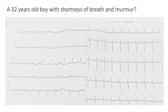This is a 32-year-old patient who presented with shortness of breath, and a murmur was auscultated. An ECG was done showing some important findings that we need to decipher. These findings are occasionally seen and not carefully looked at, so today we will be discussing them.